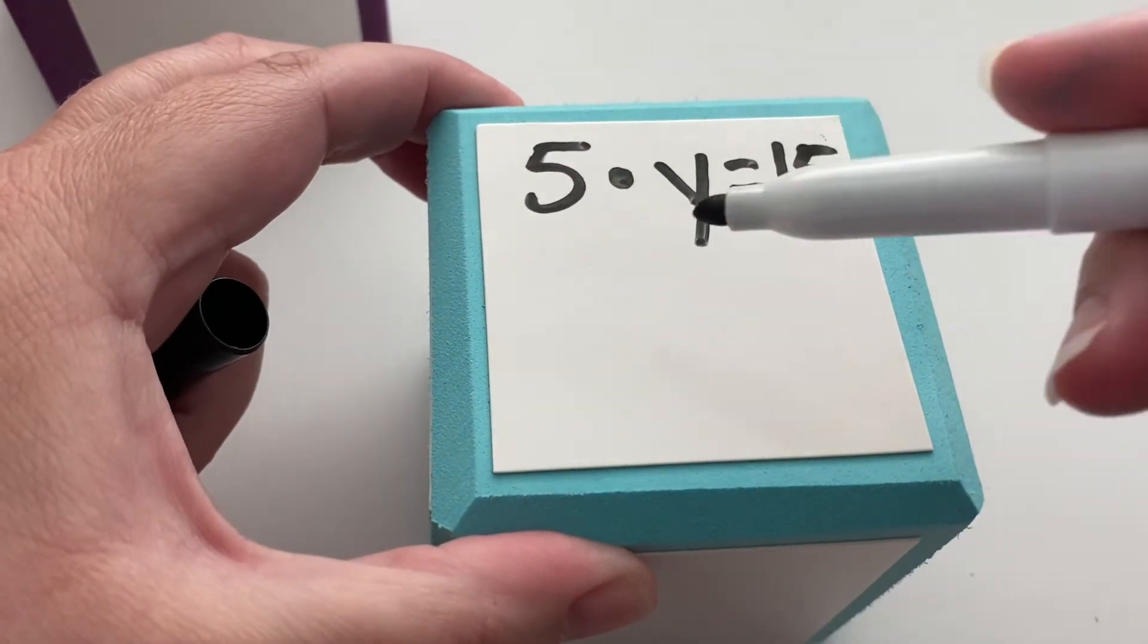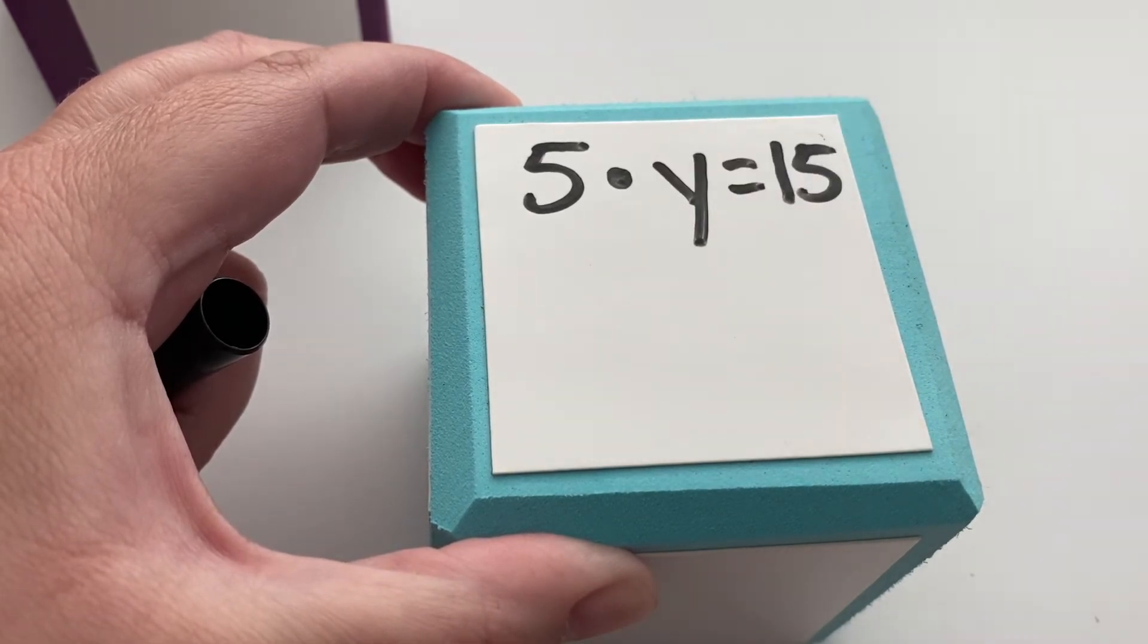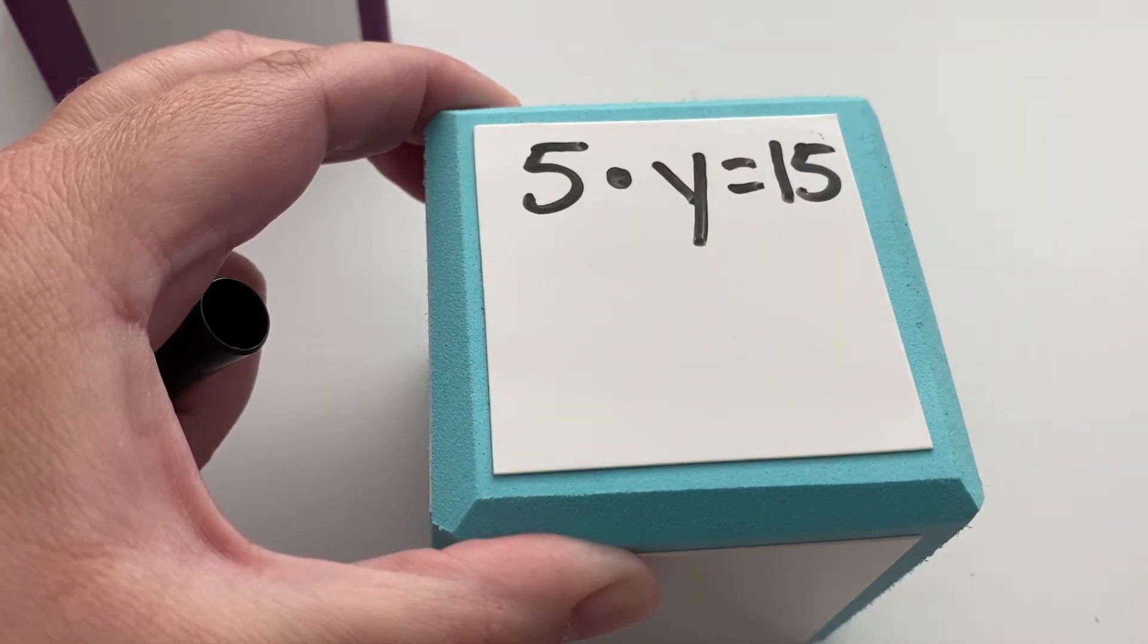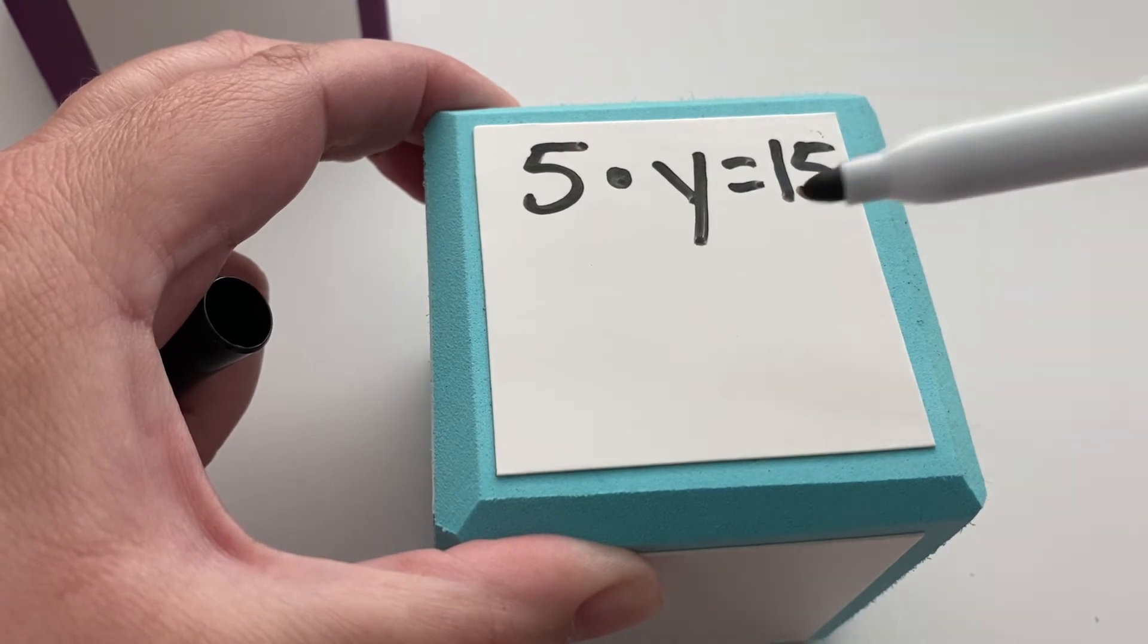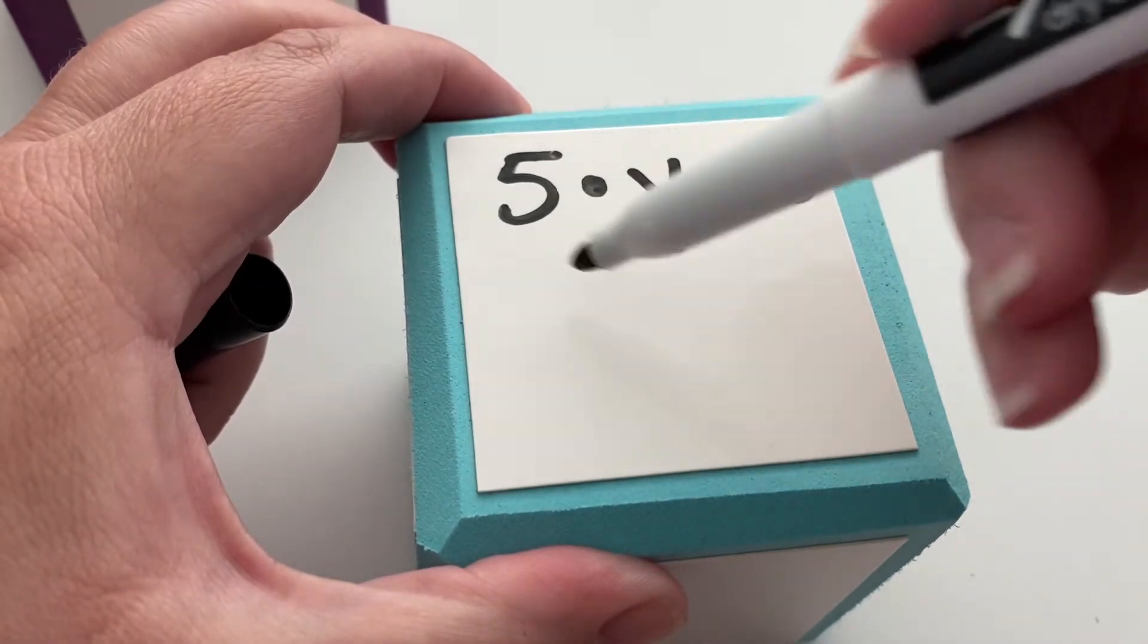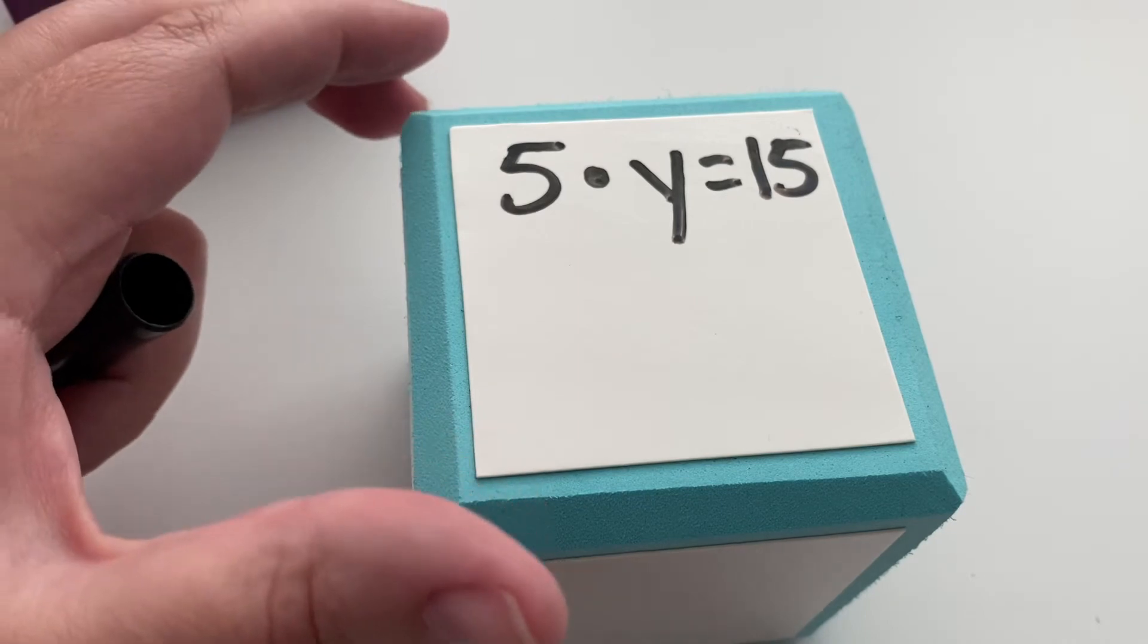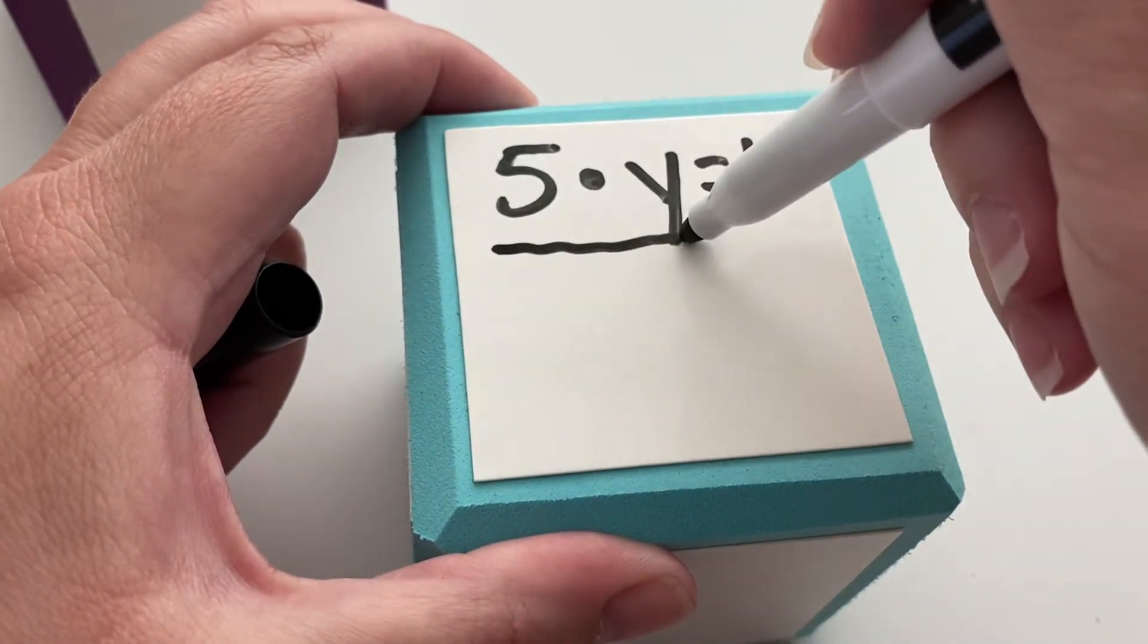Sometimes it might look a little bit different. So we're going to look at one that looks a little bit different. This one has 5 times y equals 15. And this dot is being used to represent multiplying. And I have y as our variable instead of x. But still, we said that the inverse operation of multiplying is dividing. And we're going to use this fraction bar to divide.